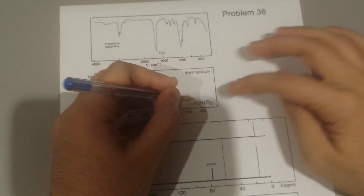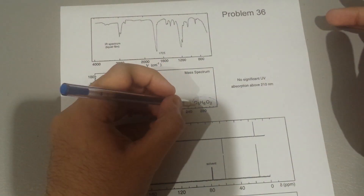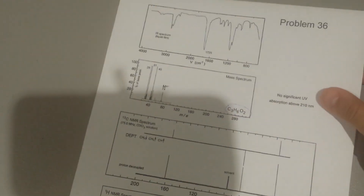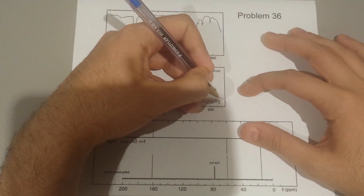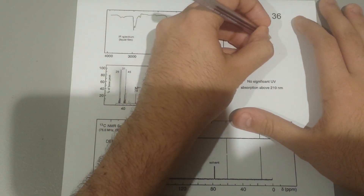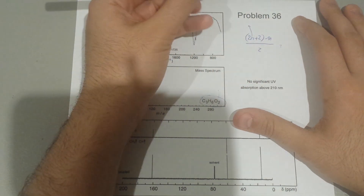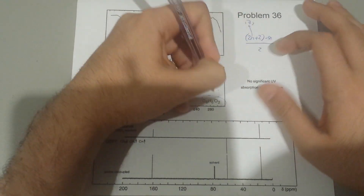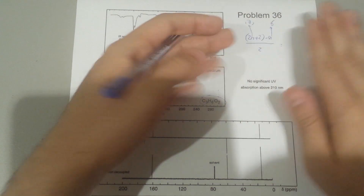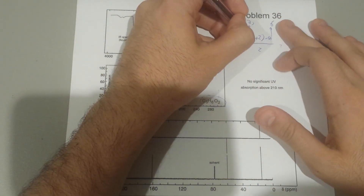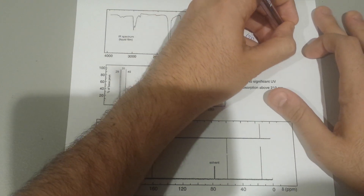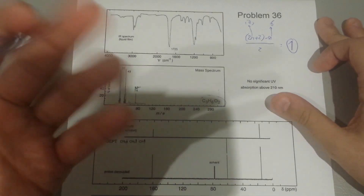In this video you have to find the structure of the chemical formula given, based upon different tests. First, find the degrees of unsaturation using the formula. Substitute N with the number of carbons — here it's 3 — and X with the number of hydrogens — here it's 6. Oxygen we ignore. So: 2 plus 2 times 3 is 8, minus 6 is 2, divided by 2 equals 1. We have 1 degree of unsaturation, meaning one double bond.